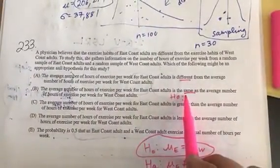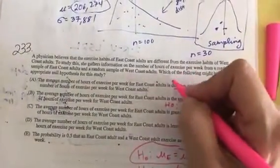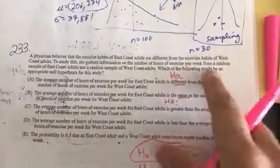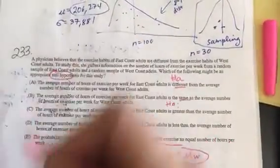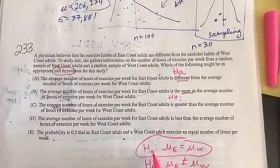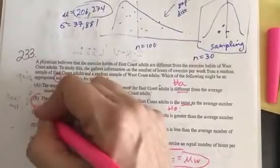This is in words, and this is our H sub A. So we just have to make sure, did they ask for the H sub O or the H sub A? And yes, in fact, they asked for the null hypothesis. So that is the H sub O. So we're going to pick B.